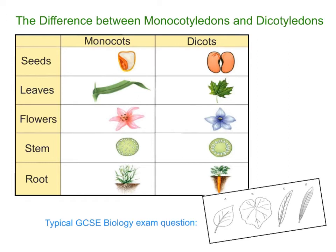Before we talk about the differences between the two, I think it's important to first look at this word here: cotyledon, and talk about what a cotyledon actually is. A cotyledon is an embryonic leaf — a very early leaf that comes from the germinating seed. So monocotyledon refers to a seed that has one of these embryonic leaves, and dicotyledon refers to a seed with two of these embryonic leaves.